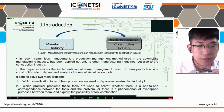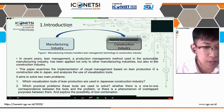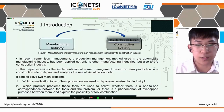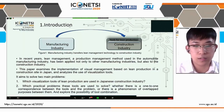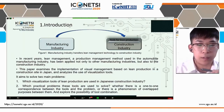We aim to solve two main problems. First, which visualization tools of lean production are used in the Japanese construction industry? And second, we want to clarify which practical problems these tools are used to solve — whether there is a one-to-one correspondence between the tools and the problems, or a one-to-multiple correspondence between them. Finally, we want to explore the possibility of tool combination to achieve lean use of tools.